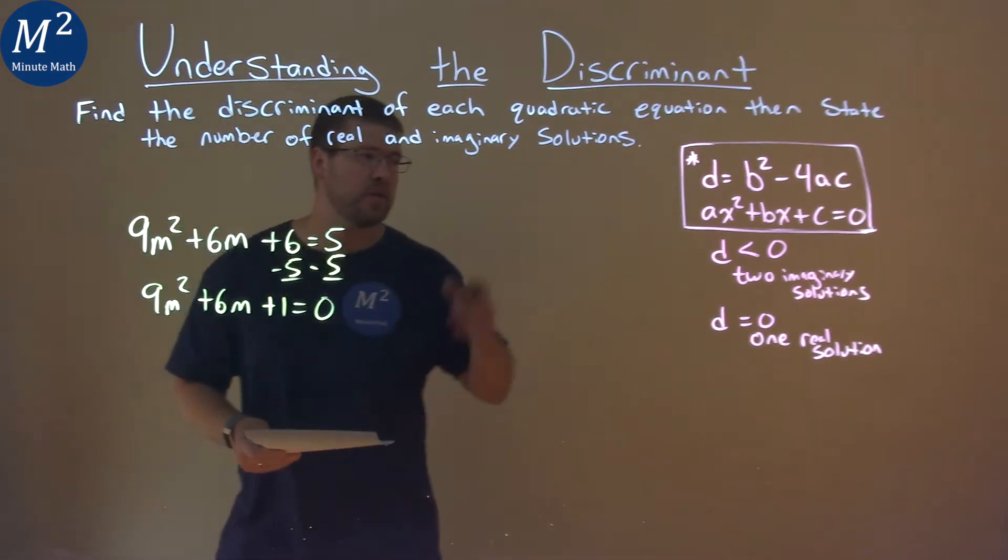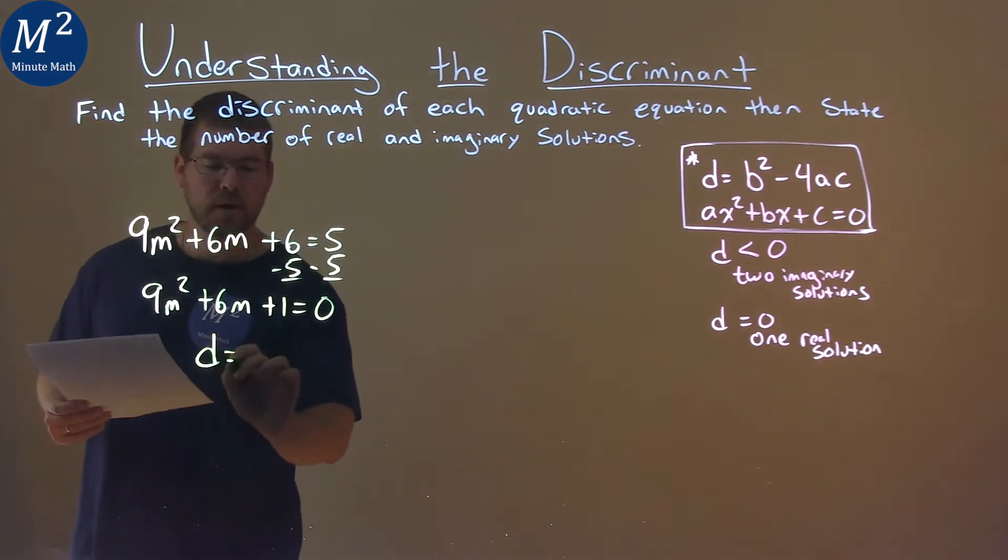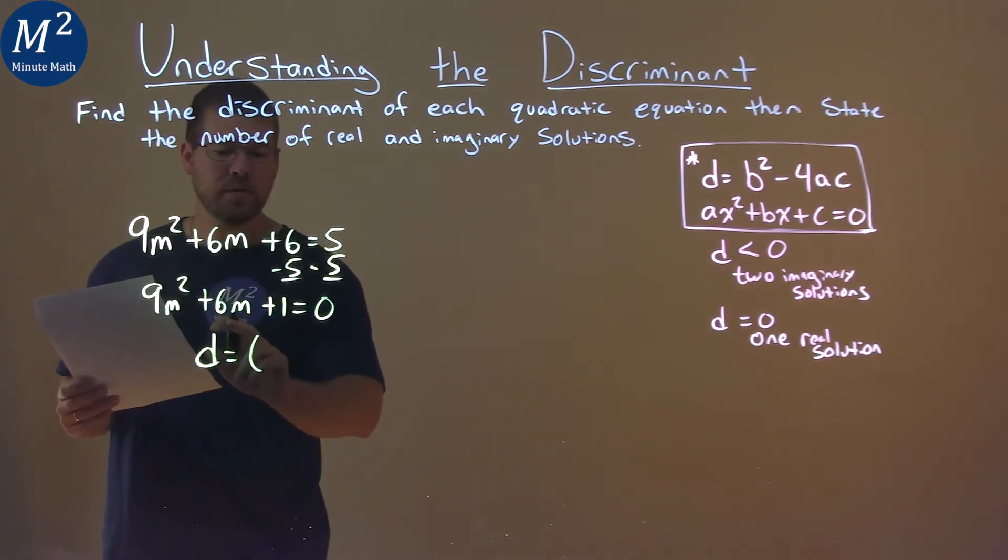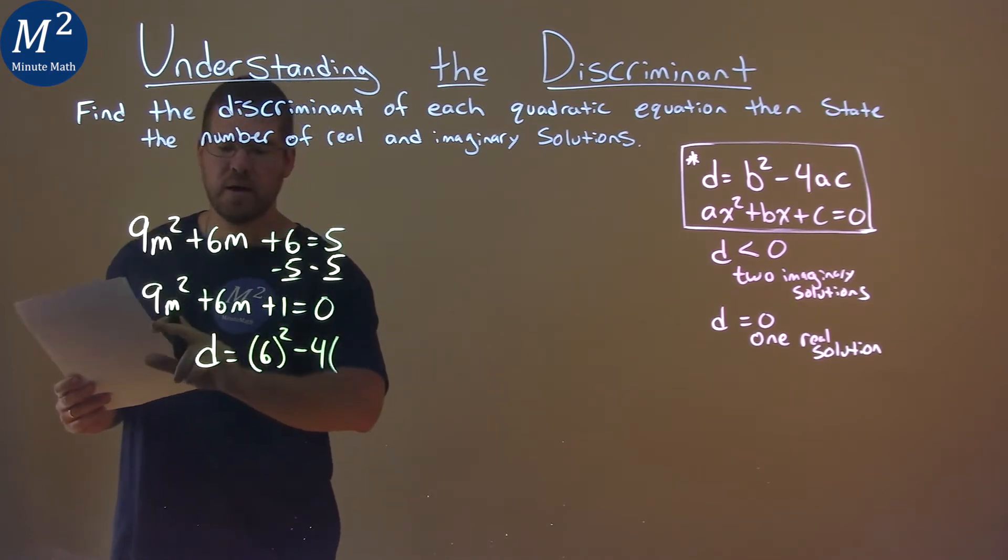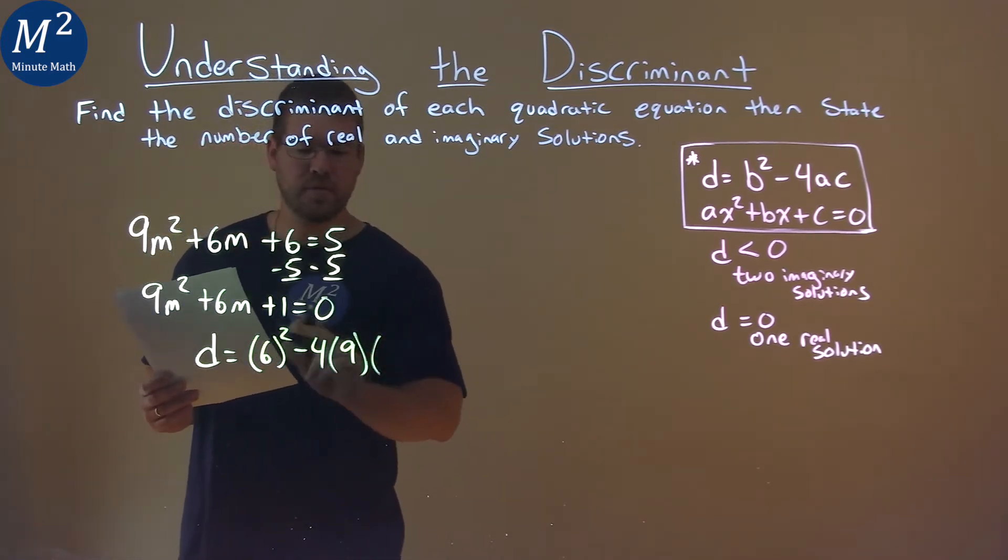Now that it's equal to 0, we can use our formula. Our discriminant is equal to our b value, which is 6 here, squared, minus 4 times a, which is 9, times c, which is 1.